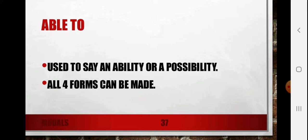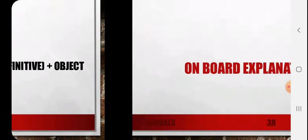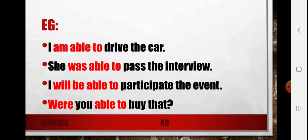Next is 'able to,' which shows some strength or ability to do a task, or shows possibility. Able to is used to say an ability or possibility, and all four forms can be made. The basic structure is: subject + be + able to + verb + object. Examples: 'I am able to drive the car,' 'She was able to pass the interview,' 'I will be able to participate in the event' — here 'will be able to' is used because it is a future event. 'Were you able to buy that?' These are a few examples in which I am using 'able to.'